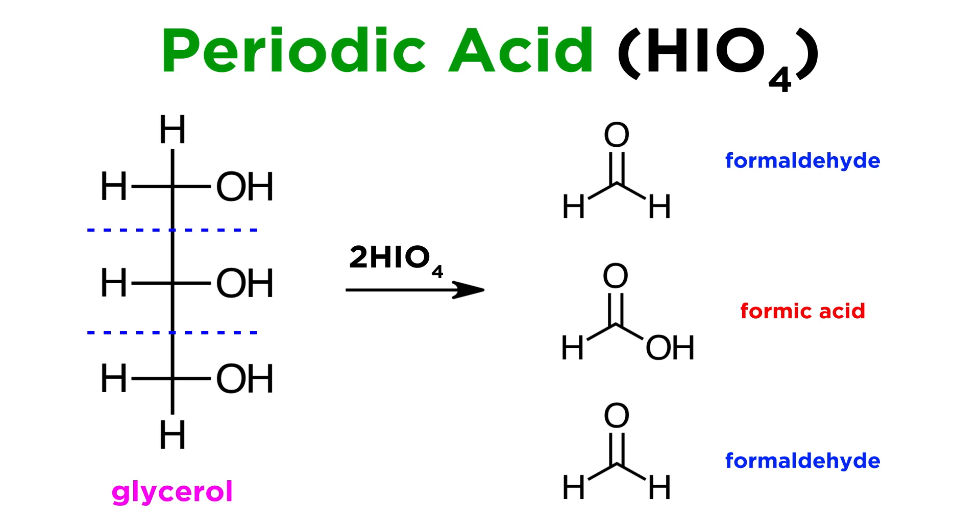So as we can see, oxidation can occur more than once depending on how many hydroxyls are adjacent. For these terminal hydroxyls, each has only one hydroxyl next door, so oxidation takes place only once to produce the aldehyde. But the internal hydroxyl has two hydroxyls next door, so oxidation occurs twice to produce the carboxylic acid.